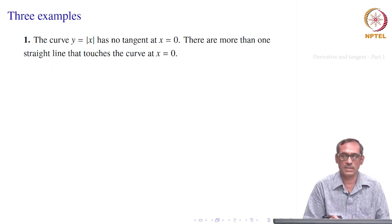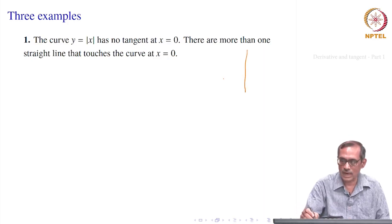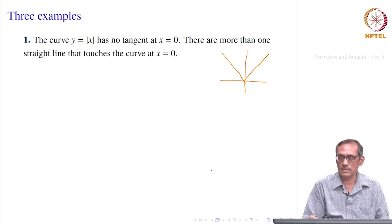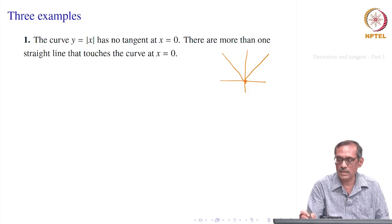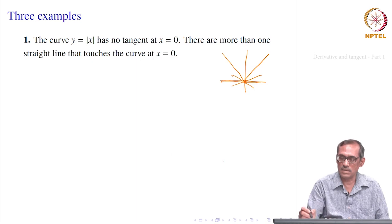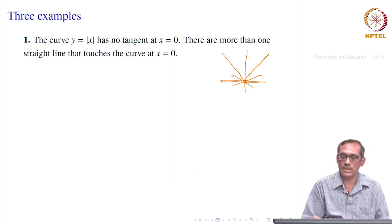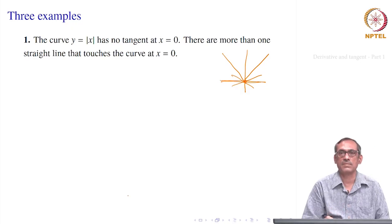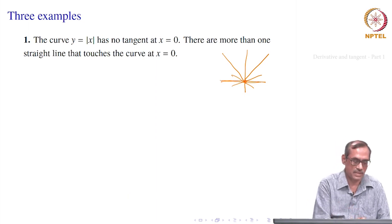Let us see some examples where critical cases arise. Suppose y = |x|. At x = 0, we cannot find one unique straight line which touches the curve. We could take the x-axis, or we could take another line — there are infinitely many straight lines we can draw touching the curve at x = 0. Since uniqueness breaks down, we say that it does not have a tangent at x = 0.